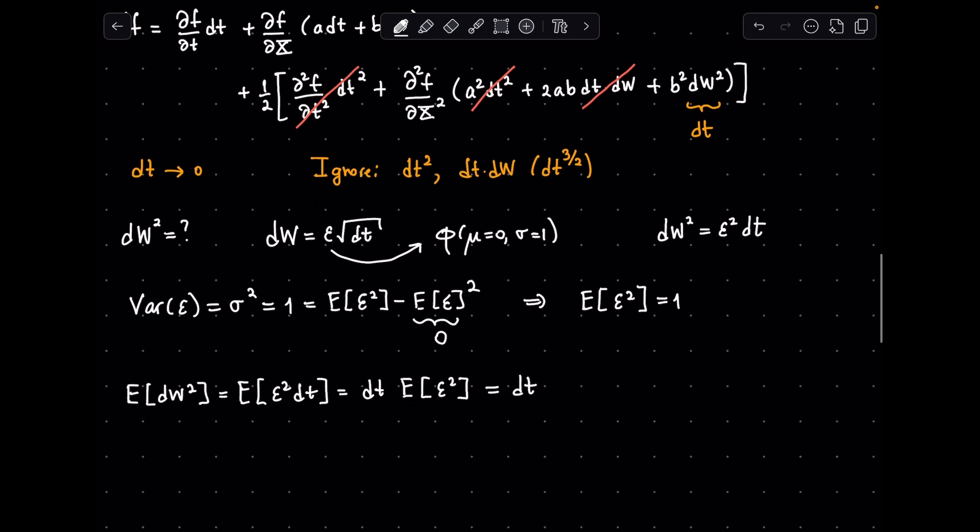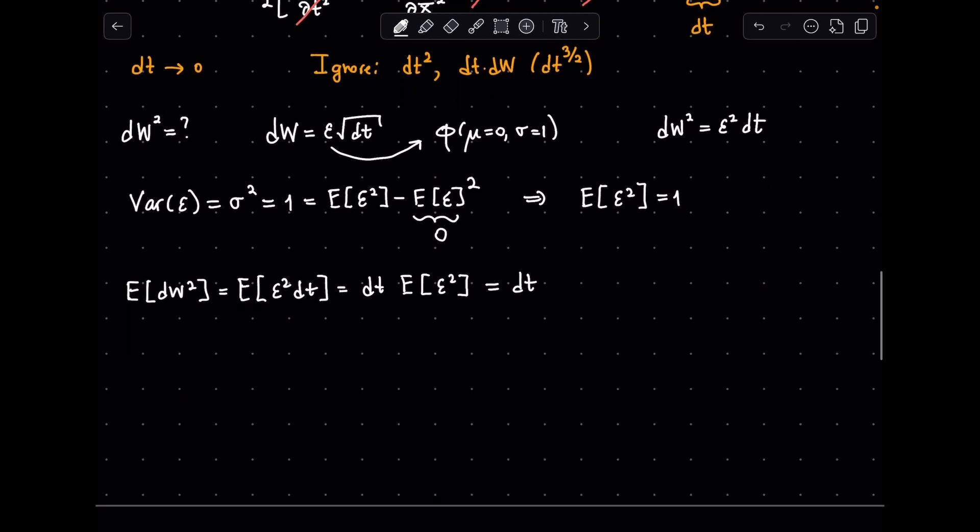We are not yet done. We need to look at how much the dw squared process fluctuates. For that, let's calculate the variance of dw squared. Again, substitute dw and use the variance formula.